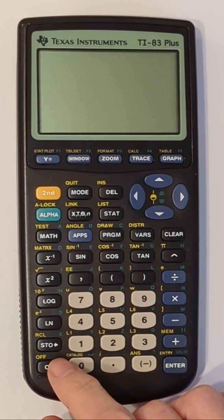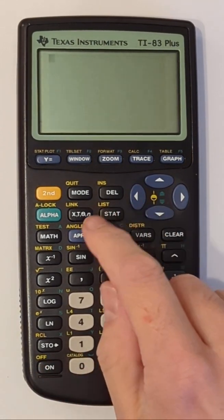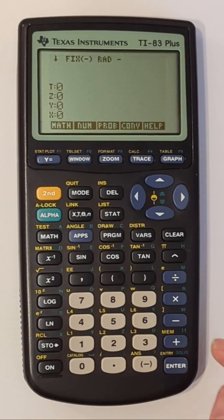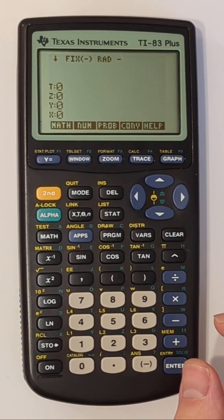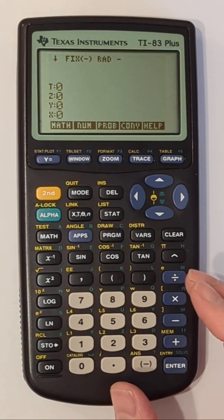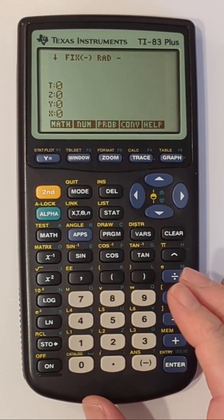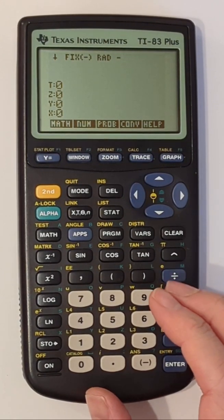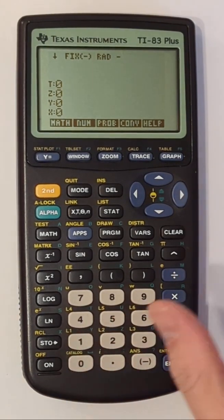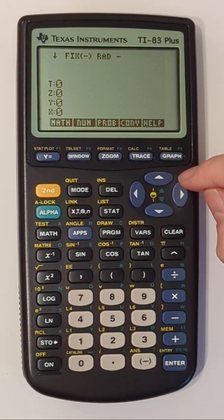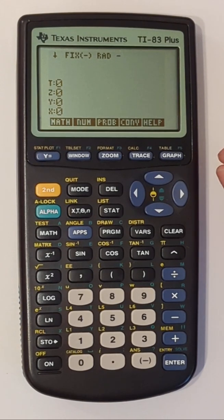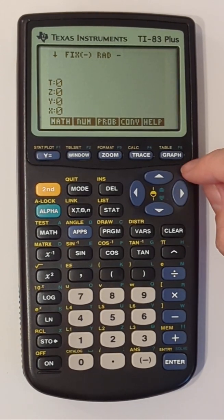It essentially turns it into an HP scientific calculator. This essentially makes this calculator possibly the cheapest RPN scientific calculator that you can get today because secondhand this Texas Instrument calculator costs about ten to fifteen dollars or pounds.